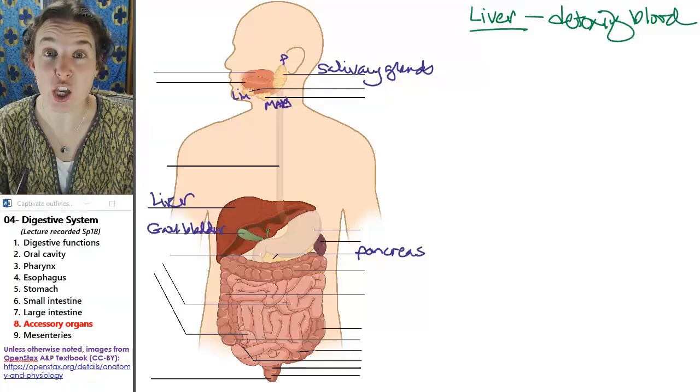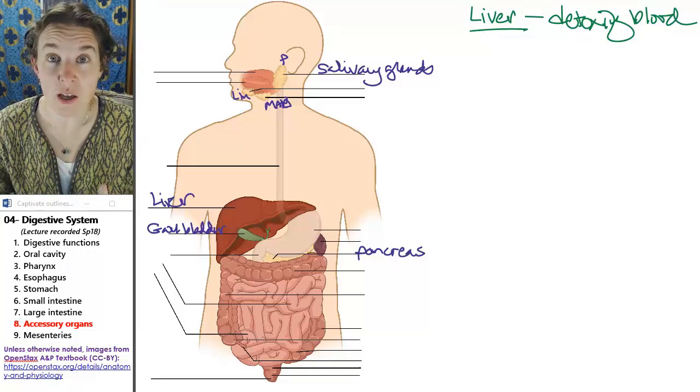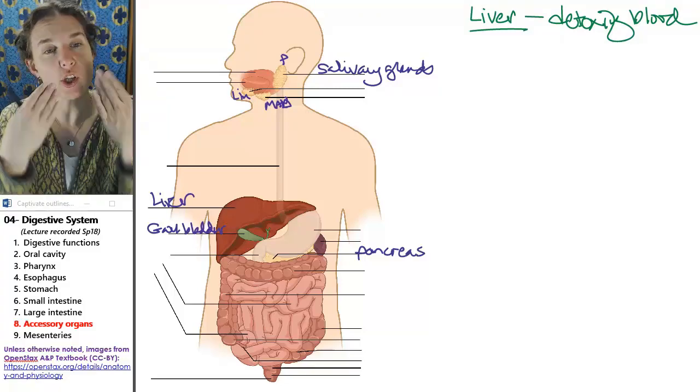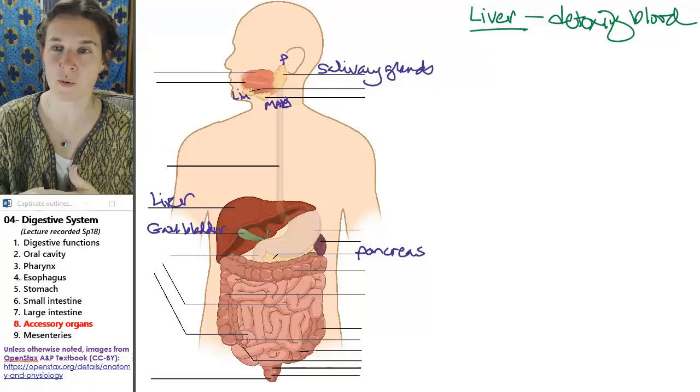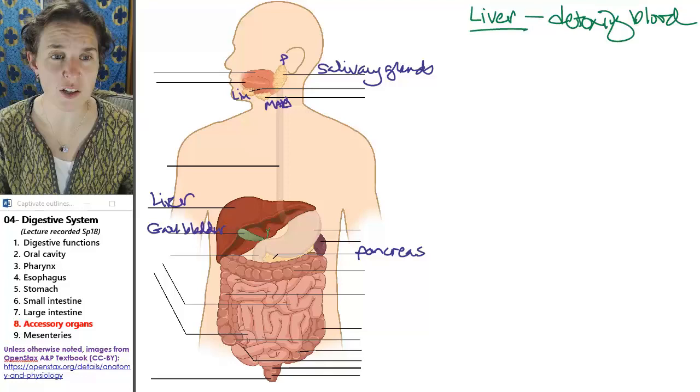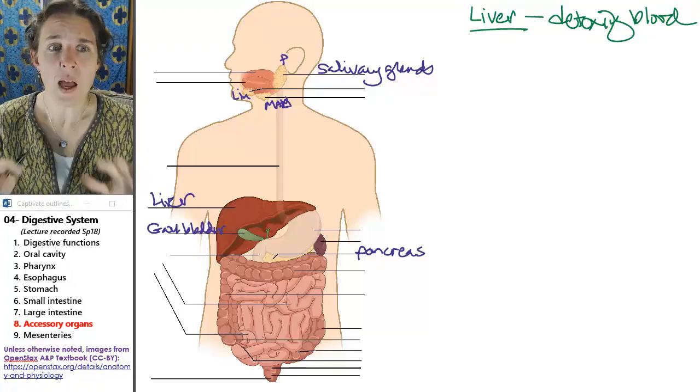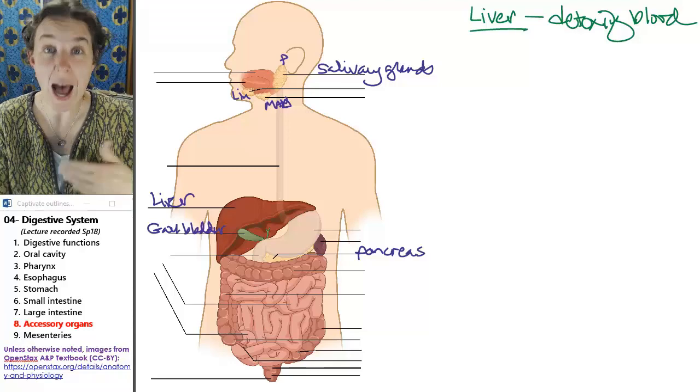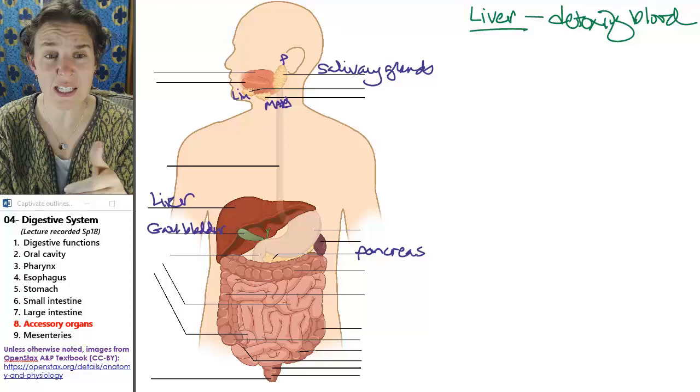Every single thing you absorb from the lumen of your digestive tube will go through the liver. Every single thing. So when you drink 800 gallons of yeast pee because you think it's fun, all of that poison goes to your liver and then your liver is like, what did you do and why did you do this to me? Don't worry, I got you. You must have made a mistake and accidentally poisoned yourself. I will fix it.